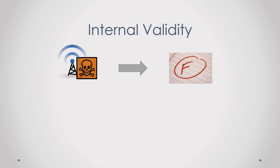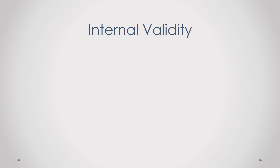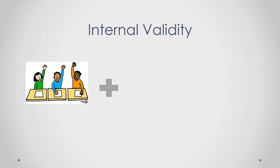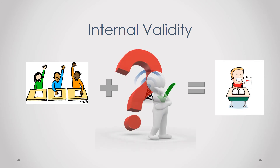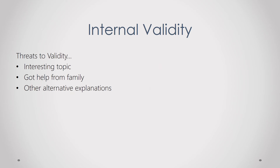I deduce that if students were given good internet connection, participation will also increase. I tested this hypothesis by providing a group of students with good internet connection and observing if participation increased. After testing, results showed that student participation actually increased. However, we might also say the topics happened to be interesting, or that families helped students understand the lecture — these plausible alternative explanations can affect the internal validity of a study.